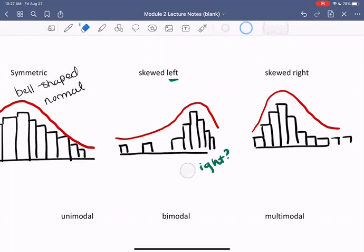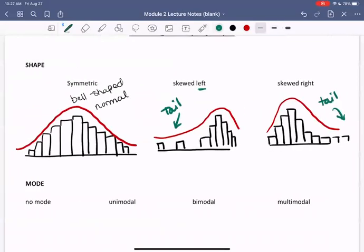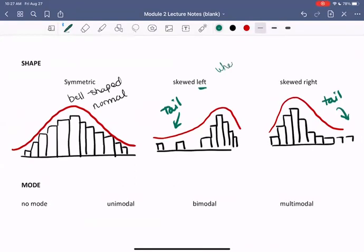Skewed left graphs or histograms have the tail on the left. Skewed right has the tail on the right. So when you're considering skewed left or right, ask yourself where is the tail?